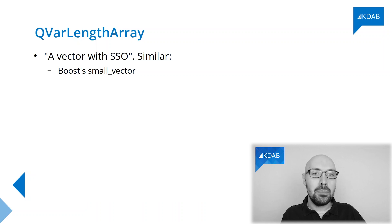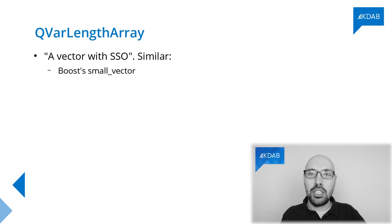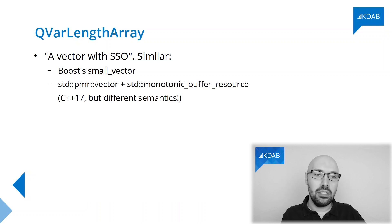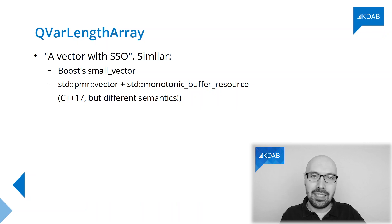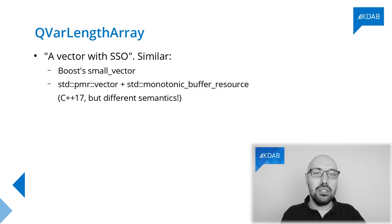In standard C++, there isn't a container which has the exact semantics. The best approximation is by using a PMR vector — the one introduced with C++17 — that uses polymorphic memory resources combined together with a monotonic buffer resource. But that doesn't have the exact same semantics, especially when it comes to the allocations, so be aware of this little difference.